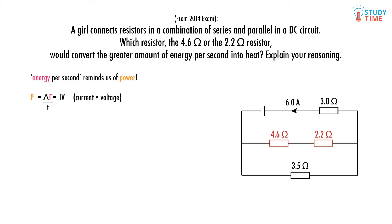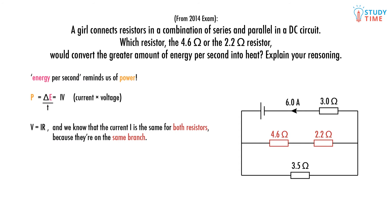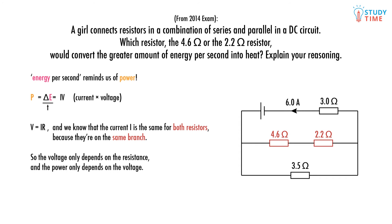Both of the resistors are in the same branch, so they both have the same amount of current through them — remember, that's one of our important circuit rules. Since we know voltage equals current times resistance, without even doing any calculations we can see that since current is the same for both resistors, the 4.6 ohm resistor will have a greater voltage across it than the 2.2 ohm resistor.